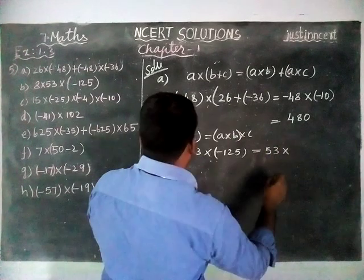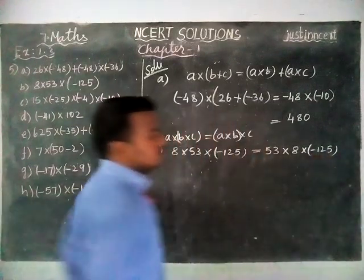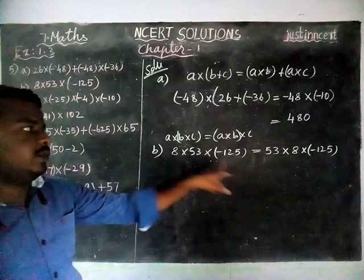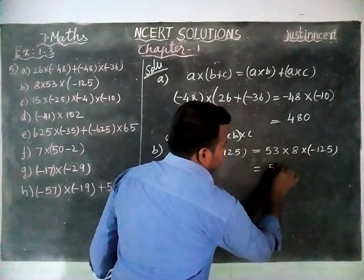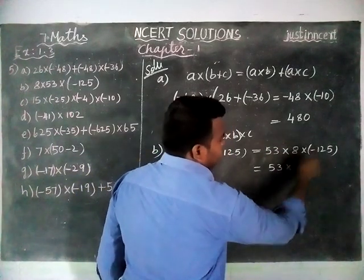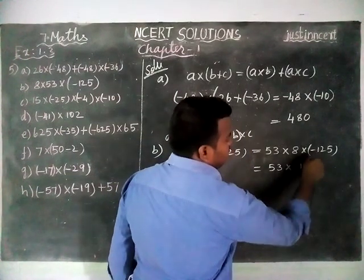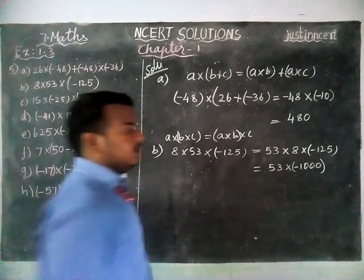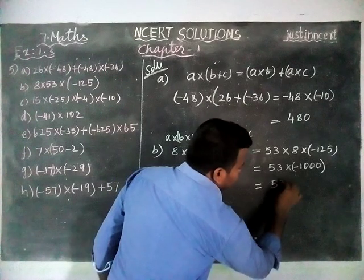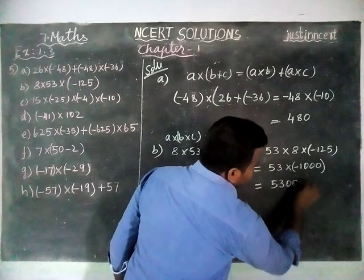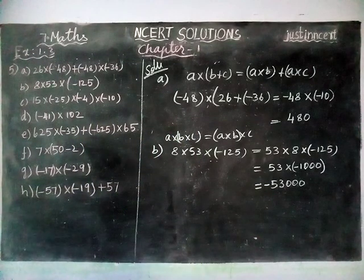We rearrange to 53 × 8 × (-125). Using associative property, we group 8 × (-125) = -1000. So now we have 53 × (-1000). Plus × minus equals minus. Therefore, 53 × 1000 = 53,000, and the answer is -53,000.